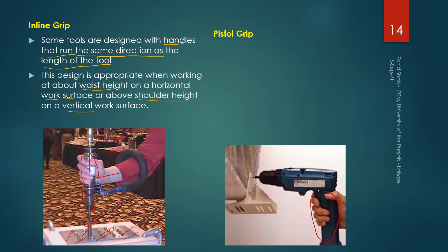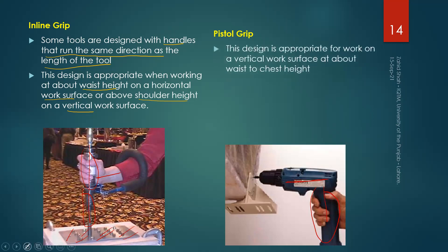The second type of grip is the pistol grip, where the grip is perpendicular to the body of the tool. This design is appropriate for work on a vertical surface at about waist height up to chest height. When the surface was horizontal and we had to work at waist height the cylindrical grip was appropriate, but when the surface is vertical at waist to chest height then the pistol grip is appropriate — again keeping the wrist straight.